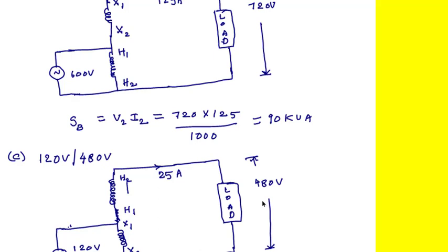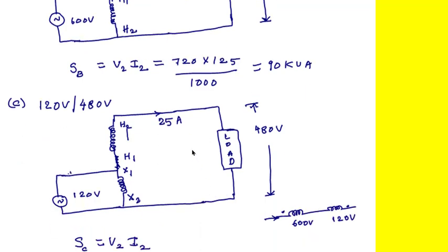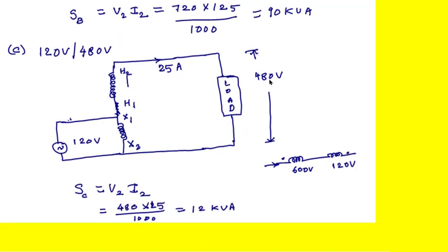The HV winding is connected in series with the load, and the current capacity of the HV winding is 25 amperes, which becomes the load current. The load voltage is 480 volts. So the kVA rating SC = V2 × I2 = 480 × 25 ÷ 1000 = 12 kVA.